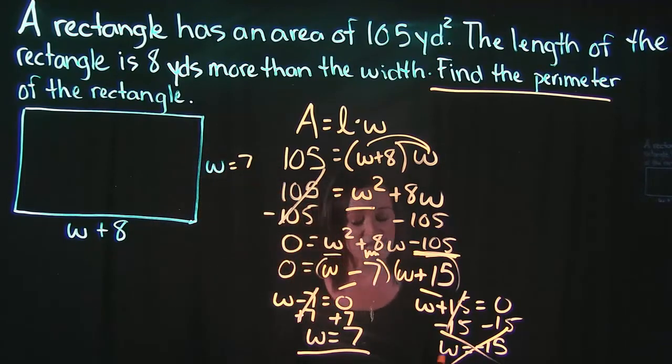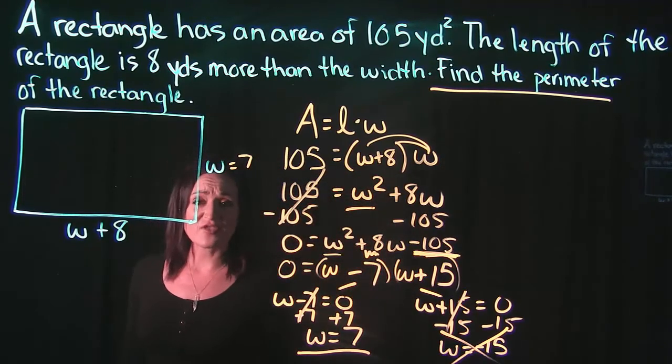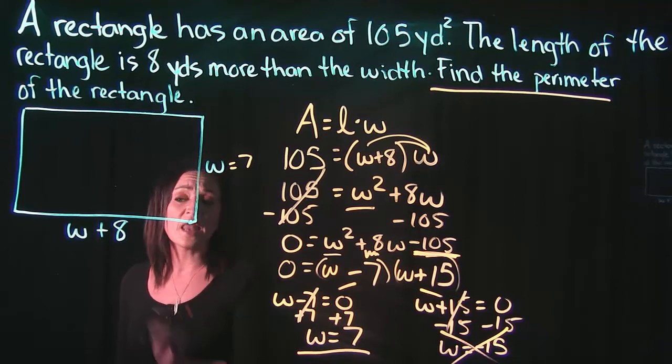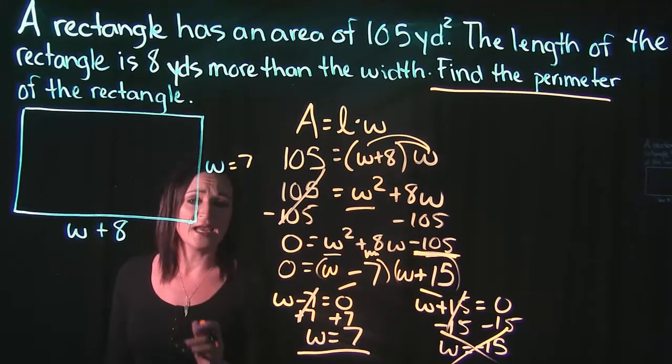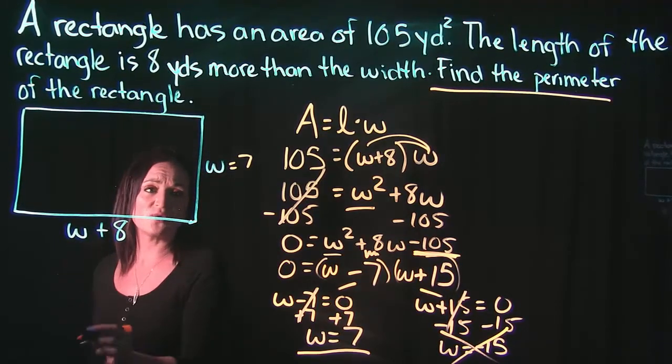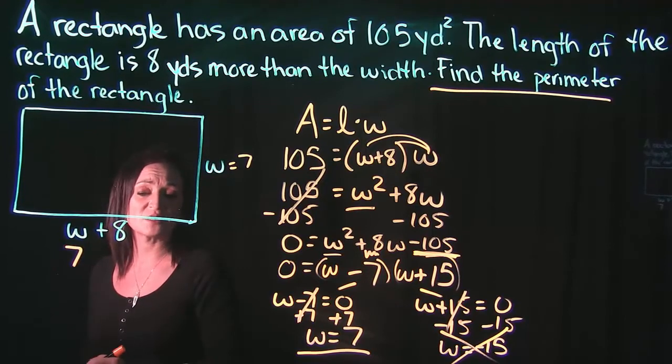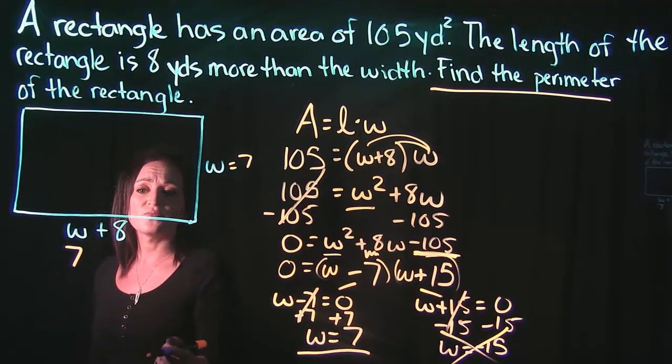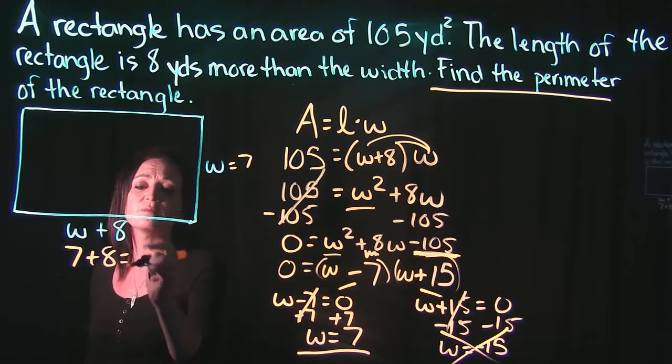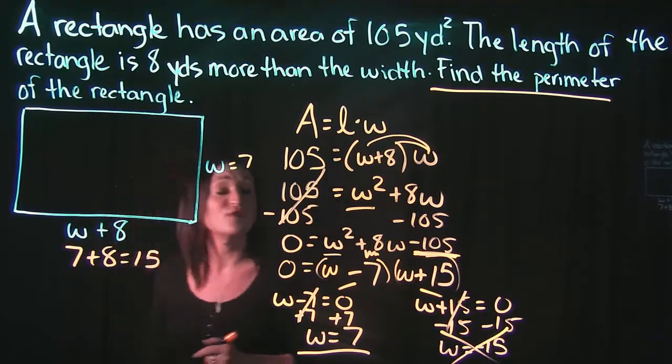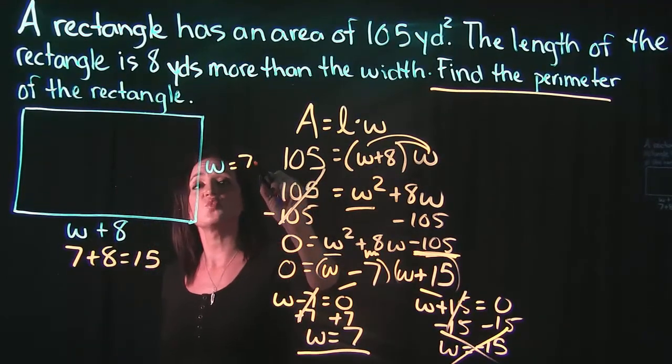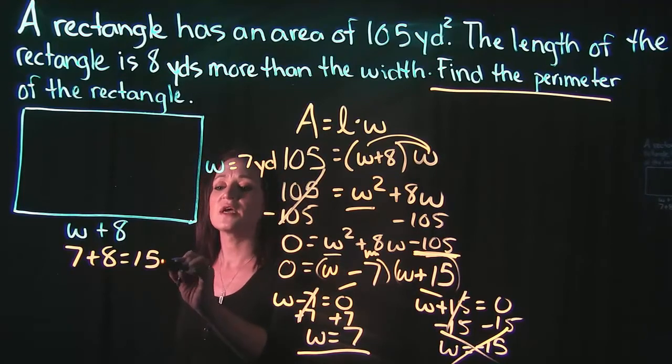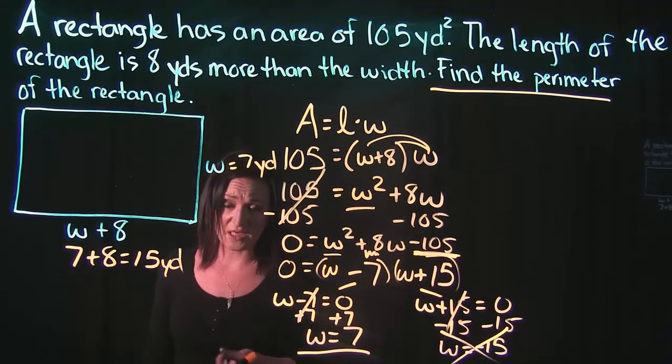We know the width equals 7. We can use that to find the length. The length is W plus 8. We now know what W is. We solved and got that W is 7. The length is W plus 8, so if we do 7 plus 8 we get 15. That means the width is 7 yards and the length is 15 yards.